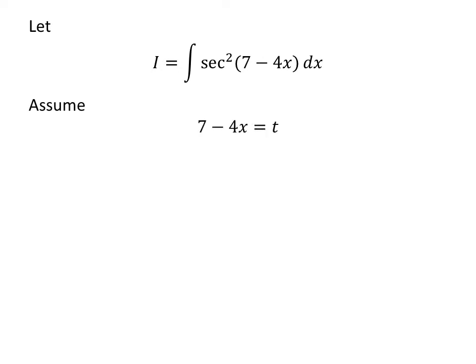To simplify the integral, let us apply the substitution method. I have assumed 7 minus 4 times x is equal to t.